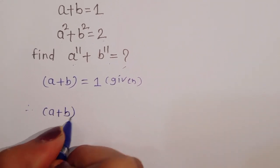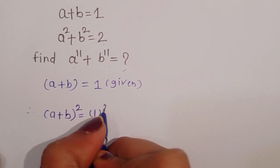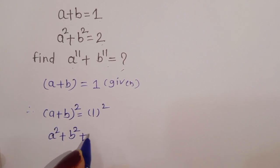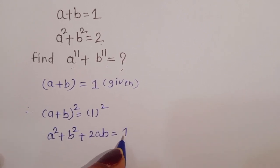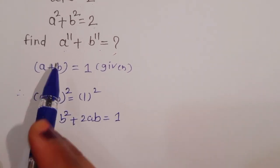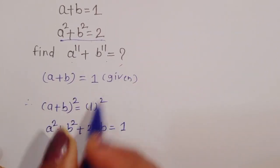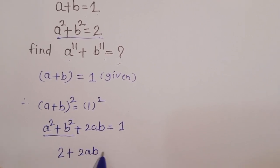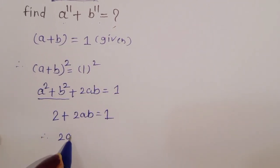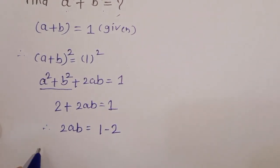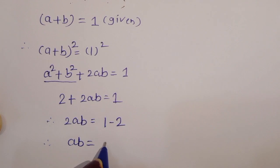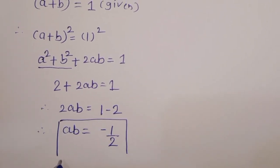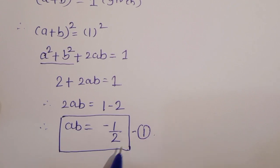We can square a plus b: a plus b whole square is equal to 1 square. That is a square plus b square plus 2ab is equal to 1. We know that a square plus b square is equal to 2 (given). So 2 plus 2ab equals 1, therefore 2ab equals minus 1, so ab equals minus 1 upon 2. This is equation 1.